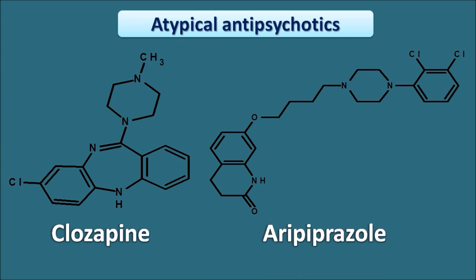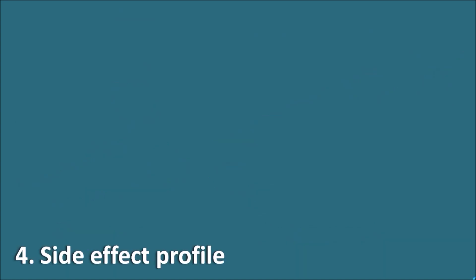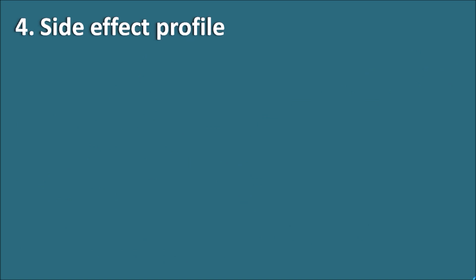Aripiprazole, another atypical antipsychotic, has a large and chemically diverse structure with a partially saturated quinoline ring system. There is no chemical relationship between clozapine and aripiprazole, so atypical antipsychotics belong to diverse chemical groups with no common structural theme.